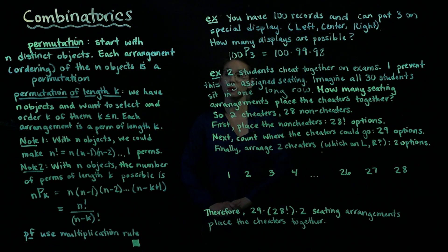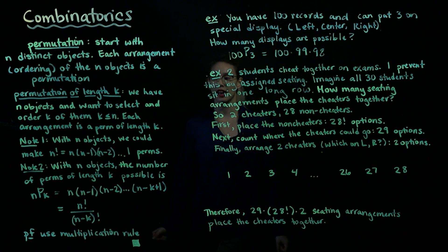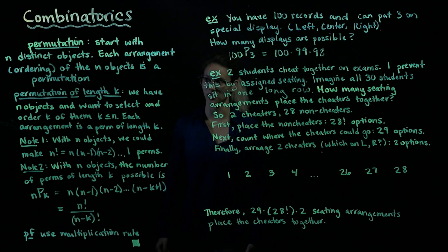A couple notes about permutations here. First of all, if we have n objects, then we can make n factorial permutations.